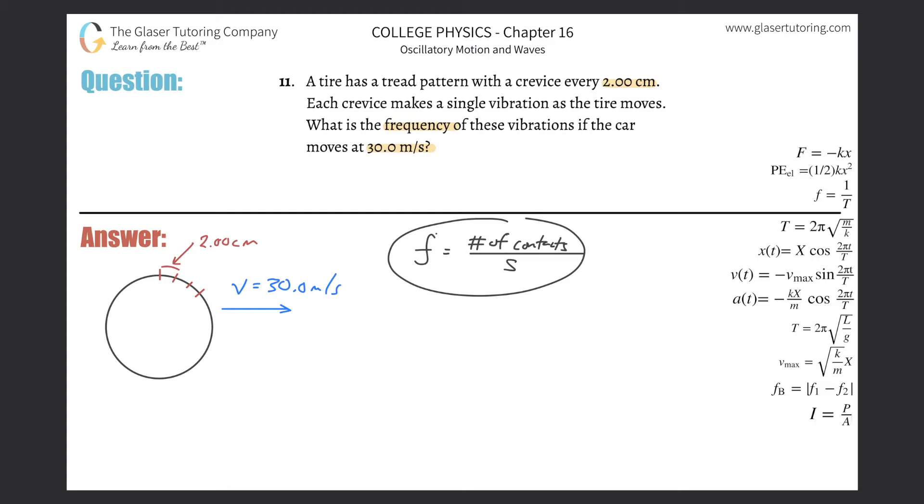So essentially, I know that I have my velocity here, which is distance per second. Thinking about this dimensionally, when I use my velocity in my calculation, I know it's going to be 30.0 meters per second. Now I'm going to be multiplying a value by this term because I can't have meters per second—I have to have contacts per second.